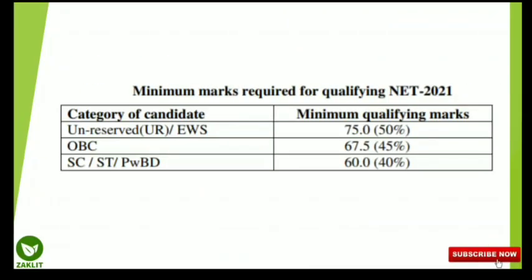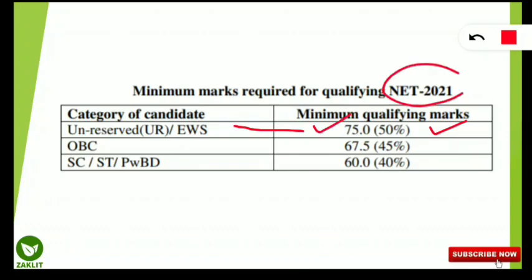First, we should know what are the minimum marks required for qualifying the ARS NET for the year 2021. For the unreserved and EWS category, if you score 50% — that is 75 marks — you will be called ARS NET qualified. For OBC category it is 45%, that is 67.5 marks, and for SC, ST, and PWBD the minimum qualifying marks is 40%, or 60 marks.